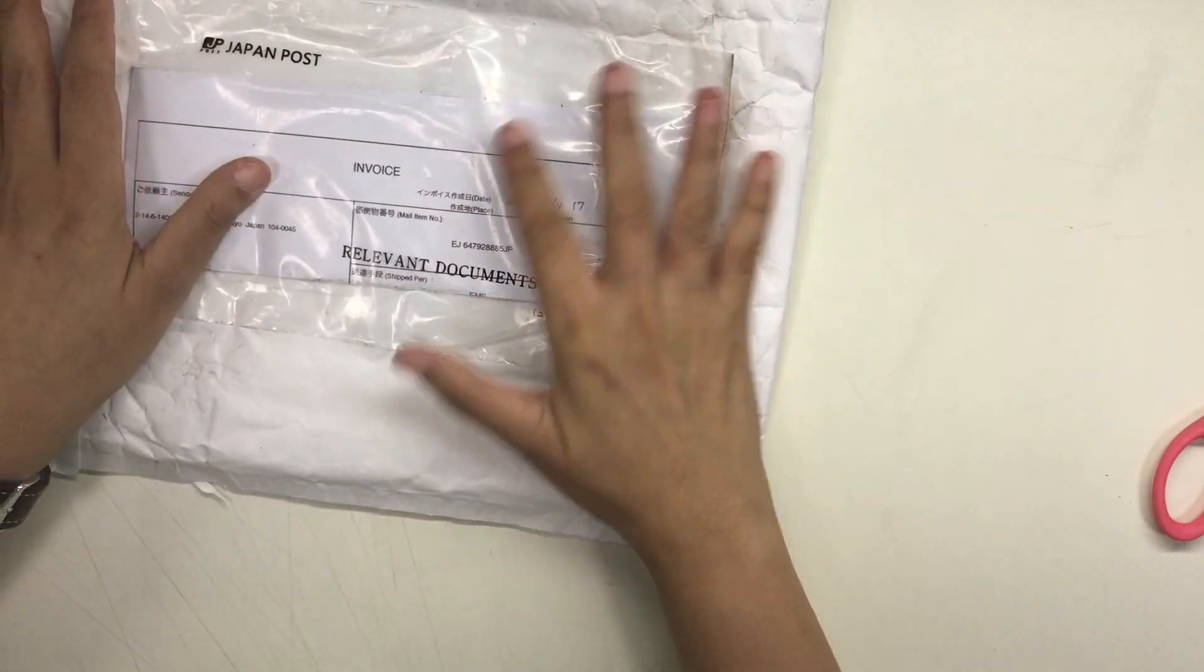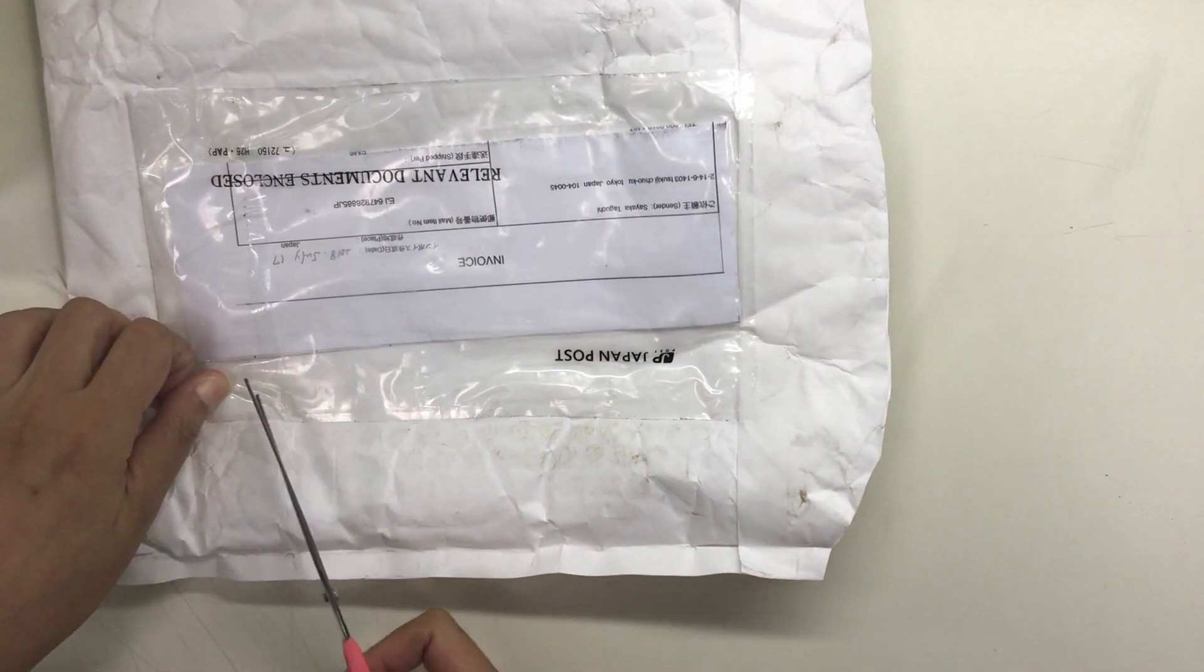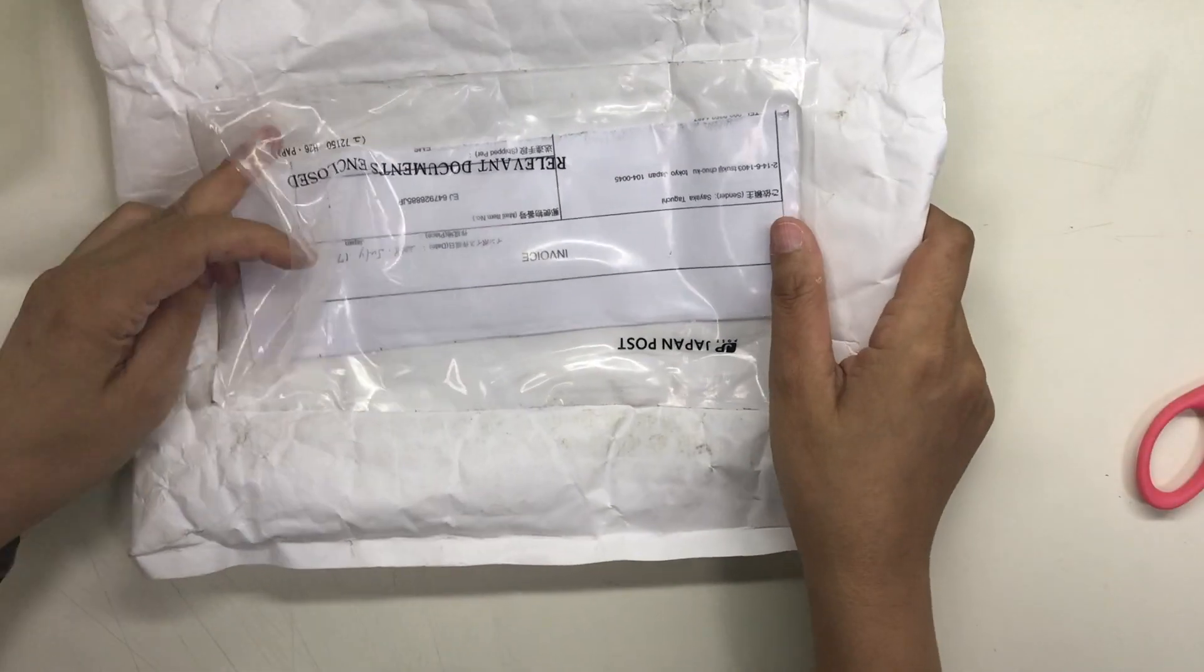First here is the order of Tomoe River paper from Kauai Tokyo on Etsy. I have a review of her store in my channel and I will leave a link for you in the description box and I will also link to her Etsy shop.